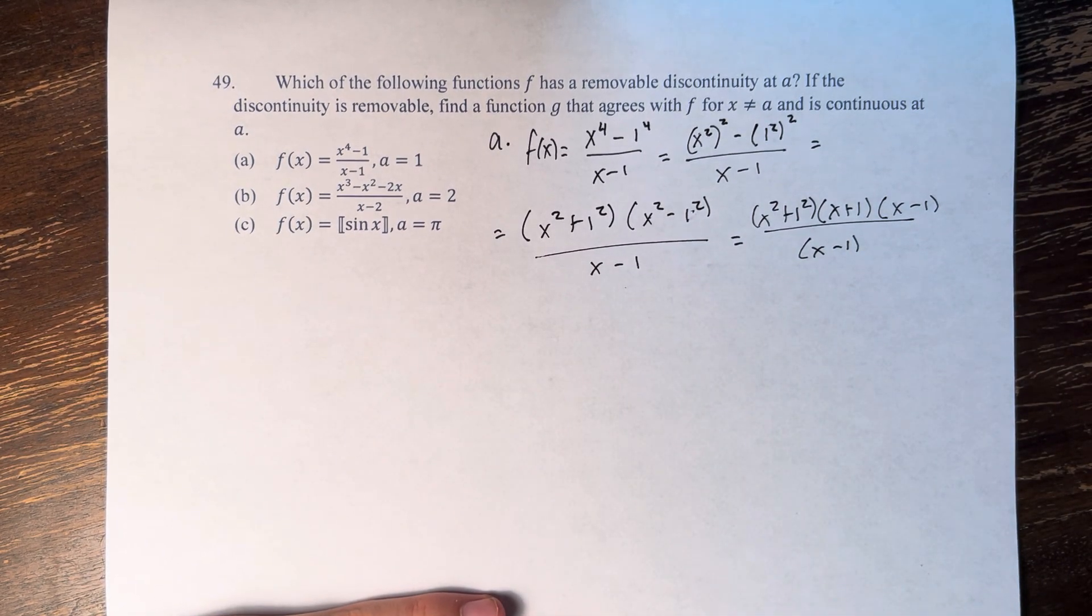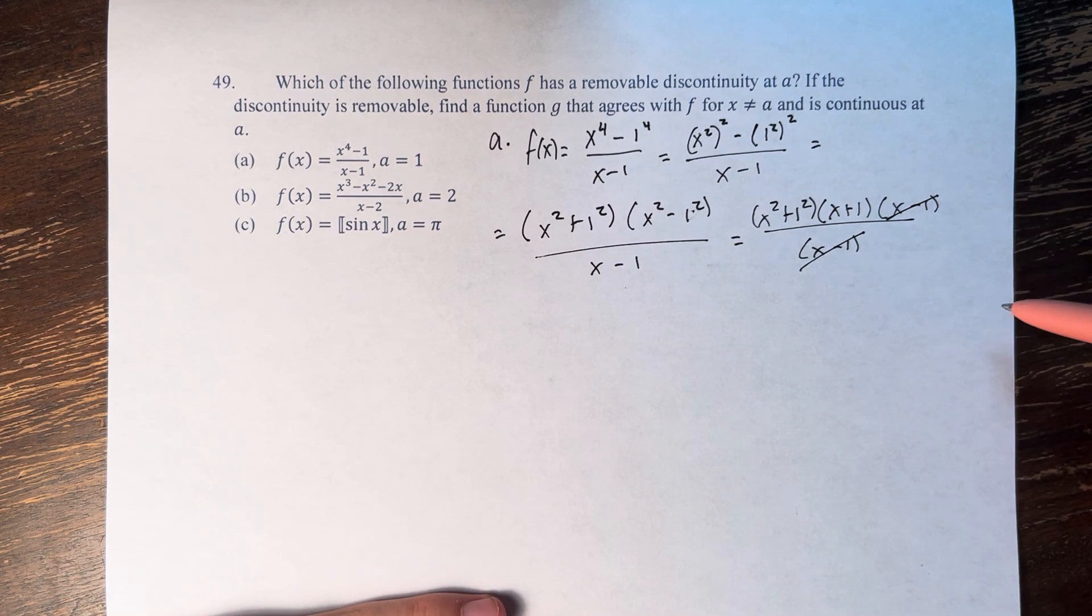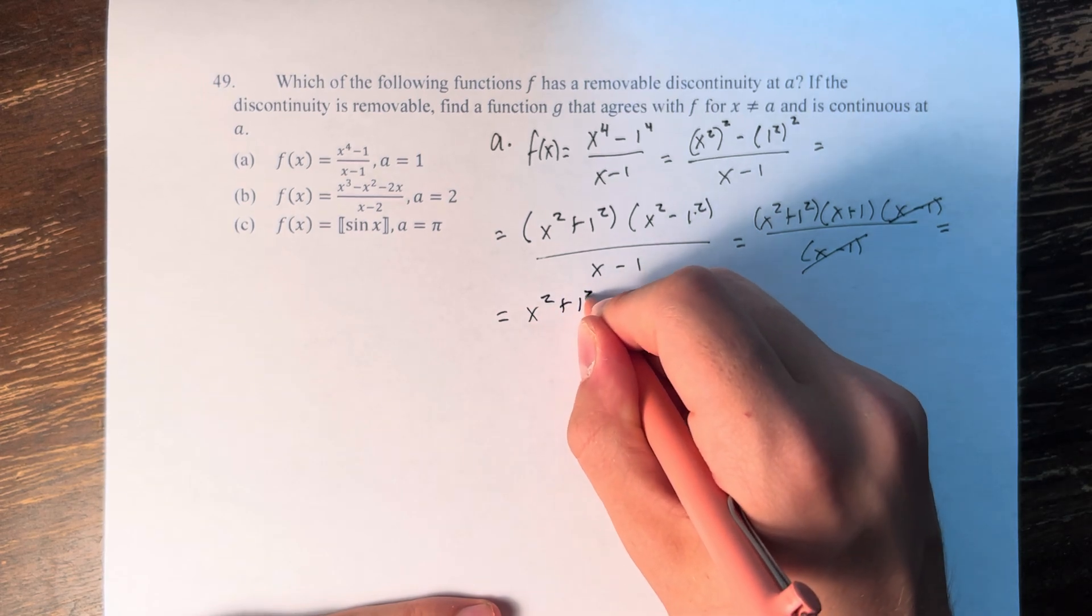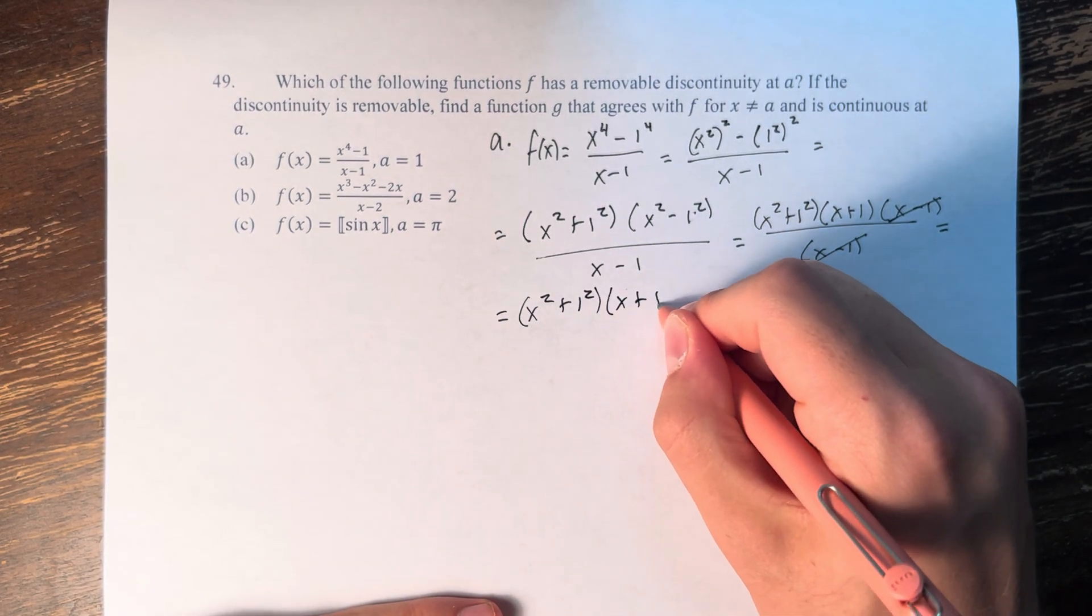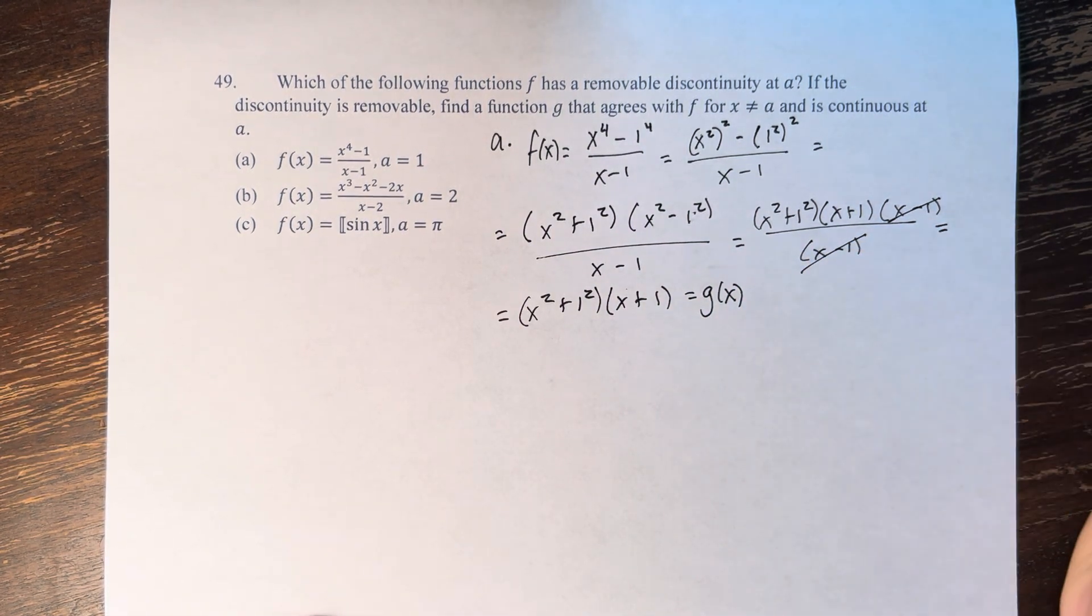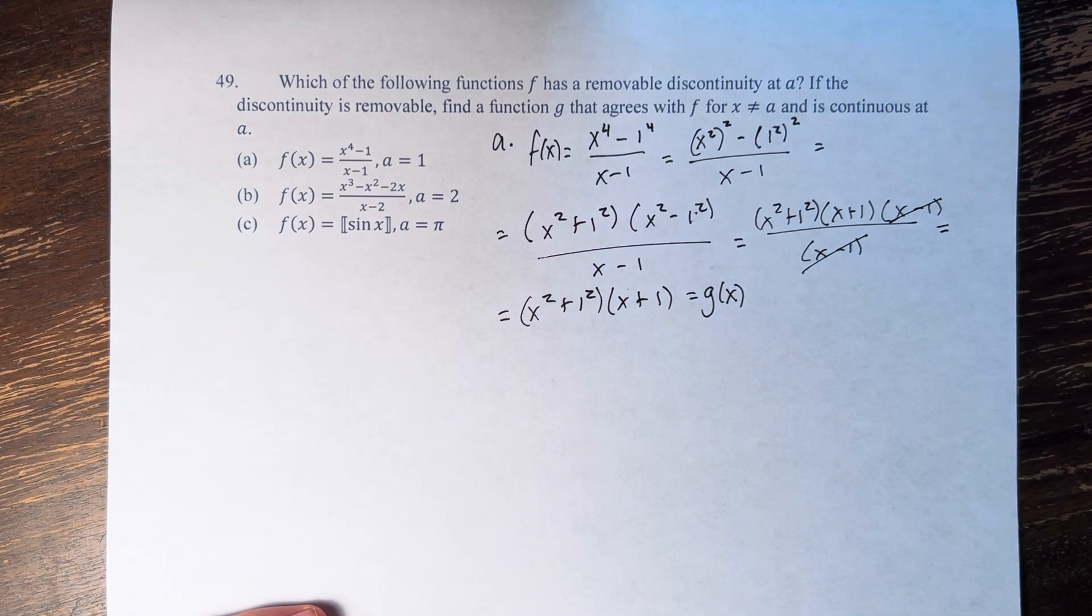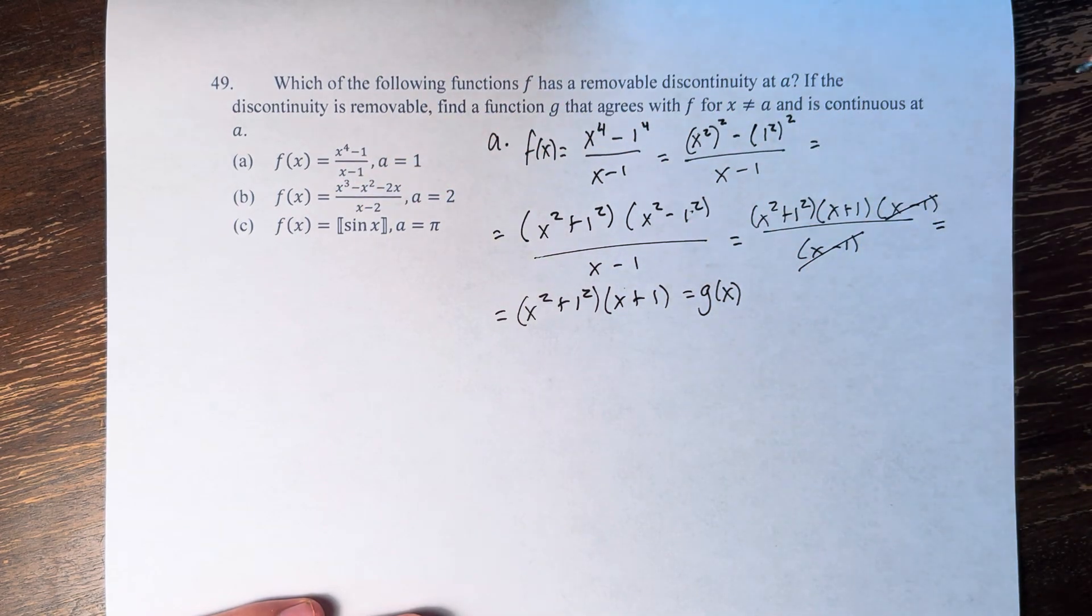Over x minus 1. And here we can remove the discontinuity by eliminating a term in the top and bottom. And therefore we get x squared plus 1 squared times x plus 1. This is your function g of x. And since we are able to come to a function that has removed the discontinuity, we can say that the discontinuity at a is removable.